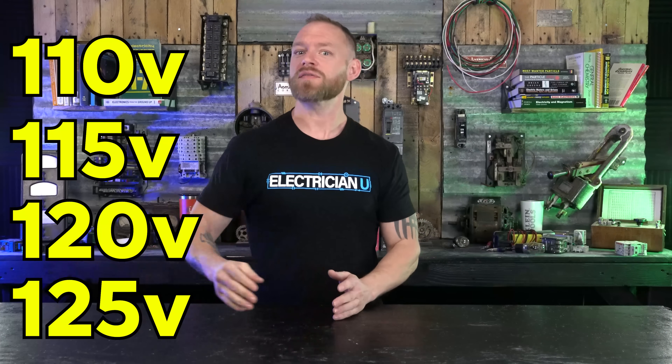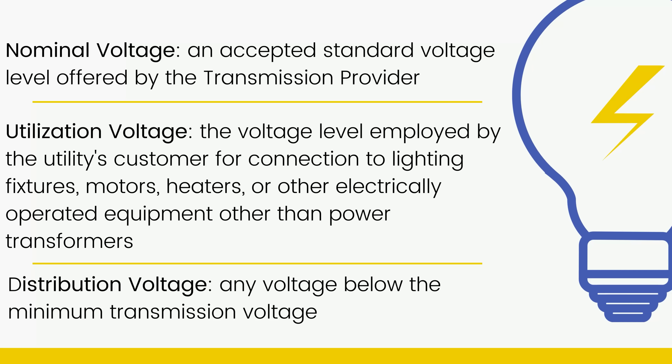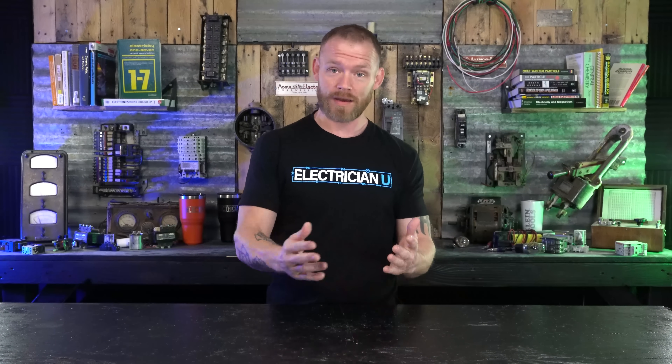A lot of times you're going to come across people saying 110, 115, 120, 125 volts — and we're really just talking about the same thing. So why are there so many different things? Well, there are different classes, so some equipment will use things differently. Some power supplied from a utility company is going to be in a range. So there's nominal voltage, utilization voltage, distribution voltage — a bunch of different voltages. When we talk about these things, we're kind of saying the same thing, but there are very specific reasons why these numbers exist.